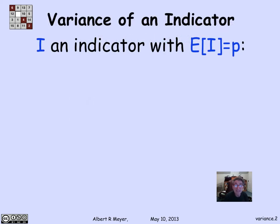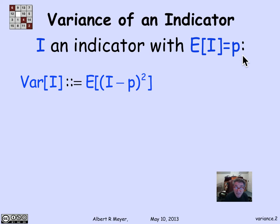A basic place to begin is to ask about indicator variables and their variance. An indicator variable i is 0-1 valued — also called a Bernoulli variable. If the probability that it equals 1 is p, that's also its expectation. So we have an indicator variable with expectation p, and we're asking: what's its variance, which by definition is the expectation of (i minus p) squared?